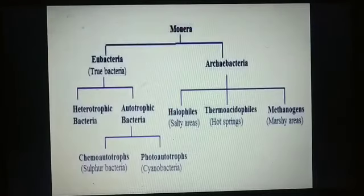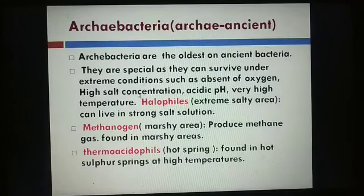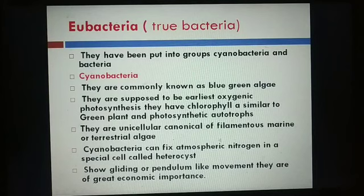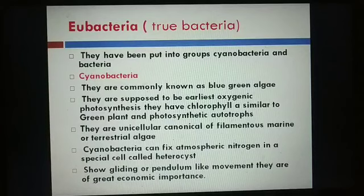In the classification of Eubacteria, we discuss autotrophic bacteria, under which we cover cyanobacteria. Cyanobacteria are the earliest oxygenic photosynthetic bacteria. They are unicellular, colonial, or filamentous, and are marine or terrestrial. They are also known as blue-green algae. Cyanobacteria can fix atmospheric nitrogen in a special cell called the heterocyst.